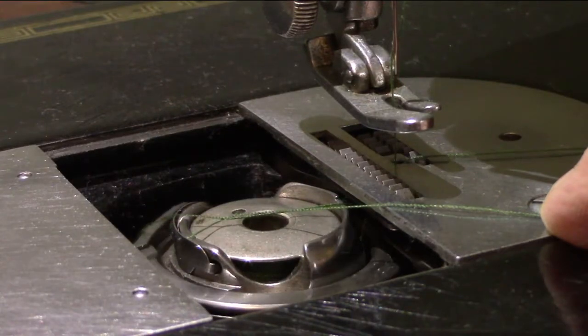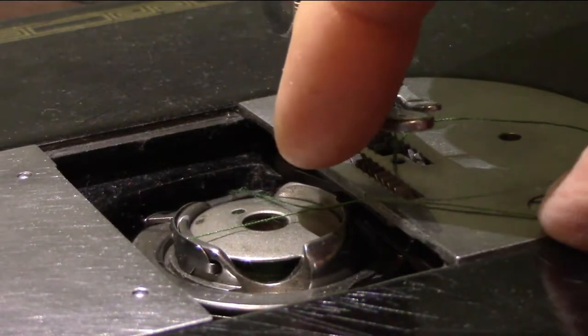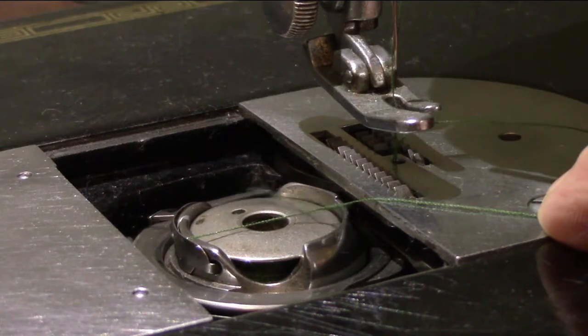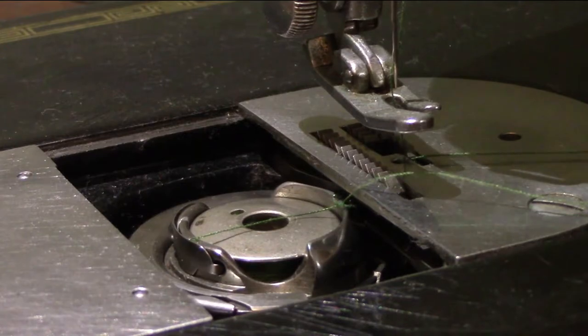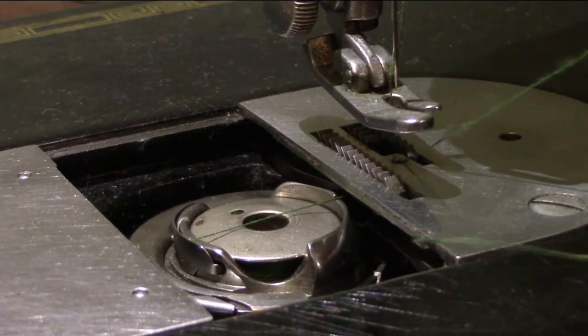The loop of needle thread then locks around the bobbin thread, so now if I pull on the tail of the needle thread, it pulls the bobbin thread up through the hole, and now we have both threads on the top.